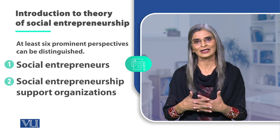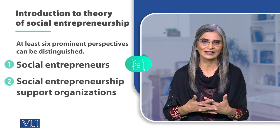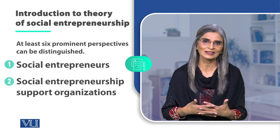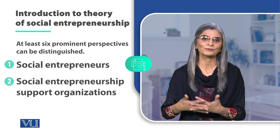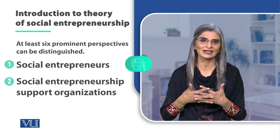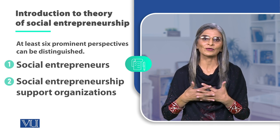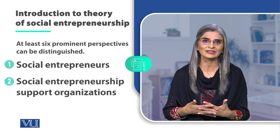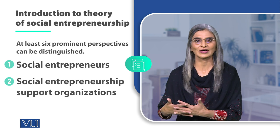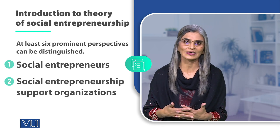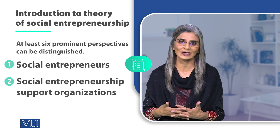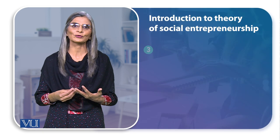उनका लिखा हुआ material और उसकी dissemination भी एक लिहाज से थोड़ी मुश्किल है, तो ये rare material है। बहरहाल, ये contribution theory में मौजूद है। दूसरे नंबर पर social entrepreneurship organizations आती हैं जो academic development को support करती हैं — social entrepreneurship के हवाले से text, inspiring stories, case studies को। For example, Ashoka का बहुत role है social entrepreneurship की understanding बढ़ाने में — लोगों को इकट्ठा करके, नए ideas discuss करने, उनकी documentation और उस material को publish और disseminate करने के हवाले से। तो दूसरा source social entrepreneurship support organizations हैं।